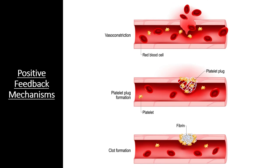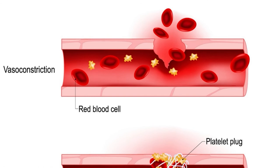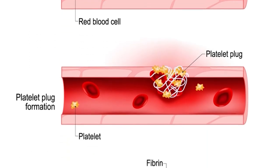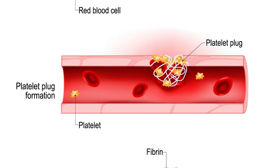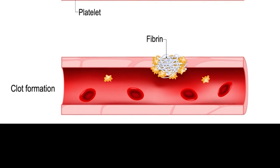Positive feedback mechanisms amplify responses and processes in biological organisms — the variable initiating the response is moved farther away from the initial set point until the process reaches a point of completion. Consider the process of blood clotting, necessary when an organism sustains an injury. When cells in the wall of a blood vessel become injured, they begin releasing chemical signals, which activates and recruits platelets within the bloodstream. These platelets release even more chemical signals to recruit even more platelets to the wound. This process continues until an entire plug of platelets is formed and there is no longer a hole in the blood vessel — effectively a positive feedback mechanism that releases signals until the platelet plug is completed.